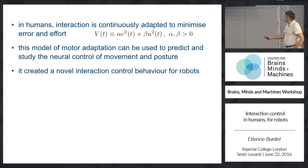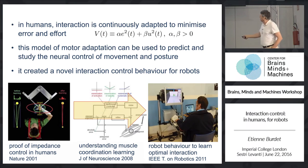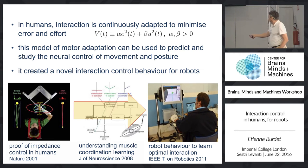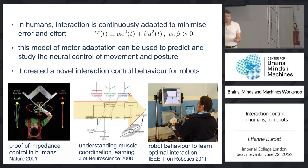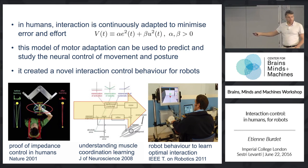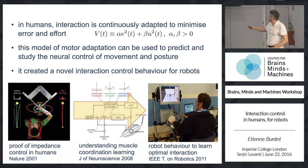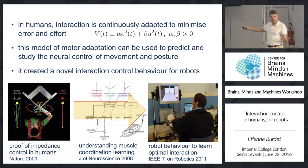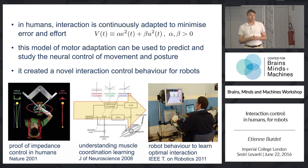This also creates a novel interaction control behavior for robots. It took us from 2001 to 2011 — ten years — because when we were doing neuroscience, we didn't care about robots at all. Because we didn't understand what was happening, we did this modeling, reproduced the results in humans, and got this behavior. It is a new behavior for robots — they had not been studied in situations where the interaction is unstable.